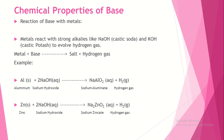Now, chemical properties of base — reaction of base with metals. Metals react with strong alkalis (water-soluble bases) like sodium hydroxide (caustic soda) and potassium hydroxide (caustic potash) to produce salt and hydrogen gas. For example, aluminium reacts with sodium hydroxide to produce sodium aluminate and hydrogen gas. Zinc reacts with sodium hydroxide to produce sodium zincate and hydrogen gas.